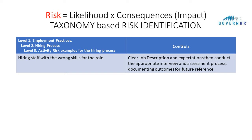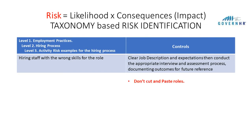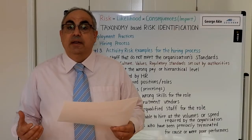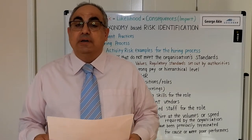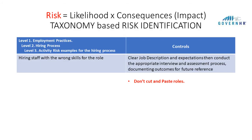The first slide looks at hiring staff with the wrong skills for the role and what controls we can have in place. The first rule is don't cut and paste — don't just replace a role with a role. Look at expanding on the role, building on it, hiring someone with more skills, better skills, a broader scope, more experience that can add value. So don't just be lazy and cut and paste.